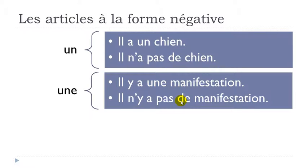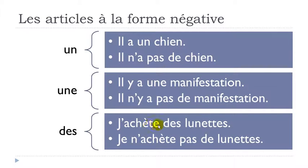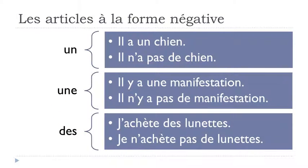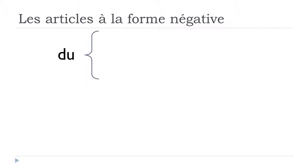So 'une' becomes 'de' in the negative form. For the plural: 'des.' J'achète des lunettes — I buy glasses. The same rule applies: 'des' becomes 'de.' So to summarize: 'un,' 'une,' and 'des' all become 'de' in the negative form for les articles indéfinis.